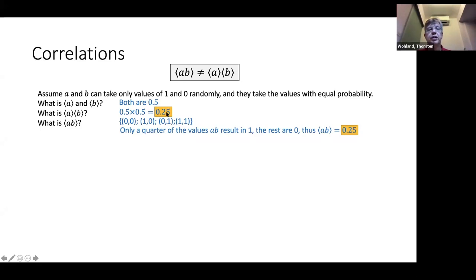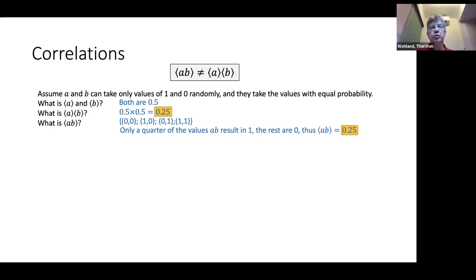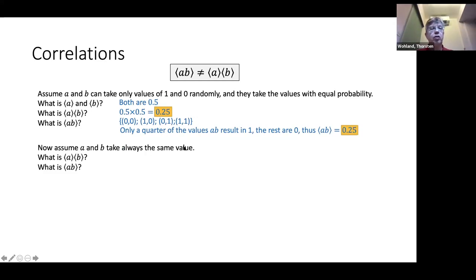The average of the product A times B equals the product of the averages — both are 0.25 — so in this case the two variables are not correlated, exactly as expected since A and B took their values randomly. Now let's look at what happens if A and B always take the same value.